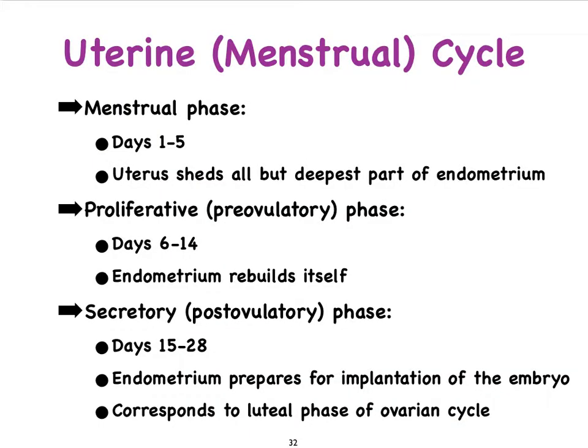While the ovary is busy going through its ovarian cycle, the uterus also goes through changes, and so we talk about the uterine or the menstrual cycle.